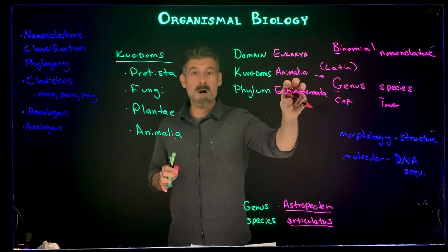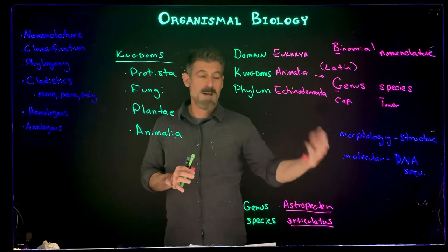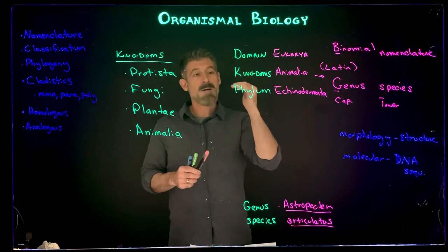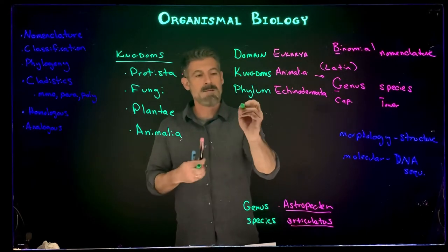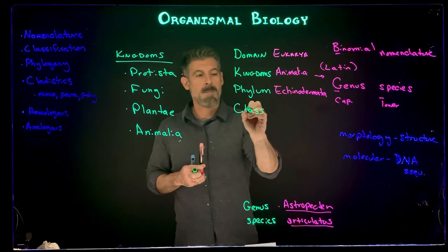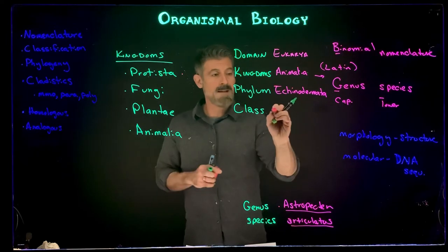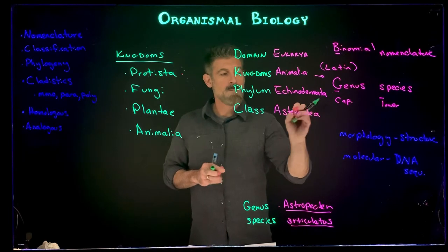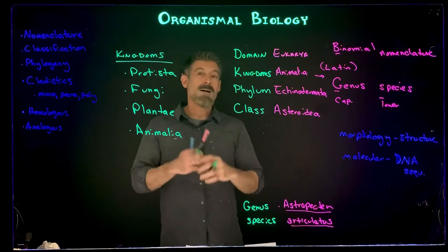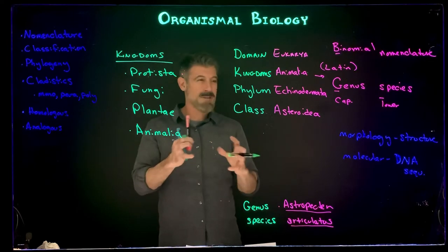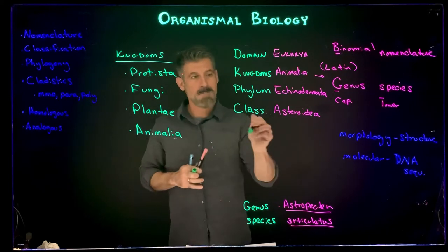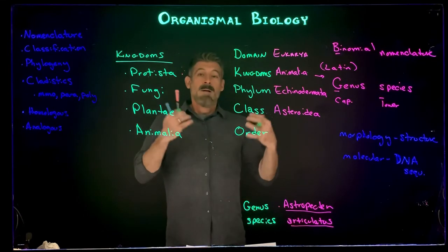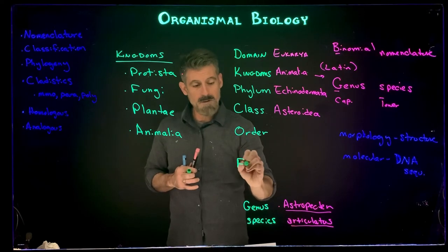These organisms have to share common features — typically morphological features historically, and today genetic or molecular features. So we have domain, kingdom, phylum, and then beyond that we have classes of organisms. Within echinoderms there are a number of different classes; the sea star is in the class Asteroidea. There are also crinoids, feather stars, ophiuroids, sea urchins, and echinoids — different types of echinoderms at the class level. Beyond class is order, and beyond order is family.